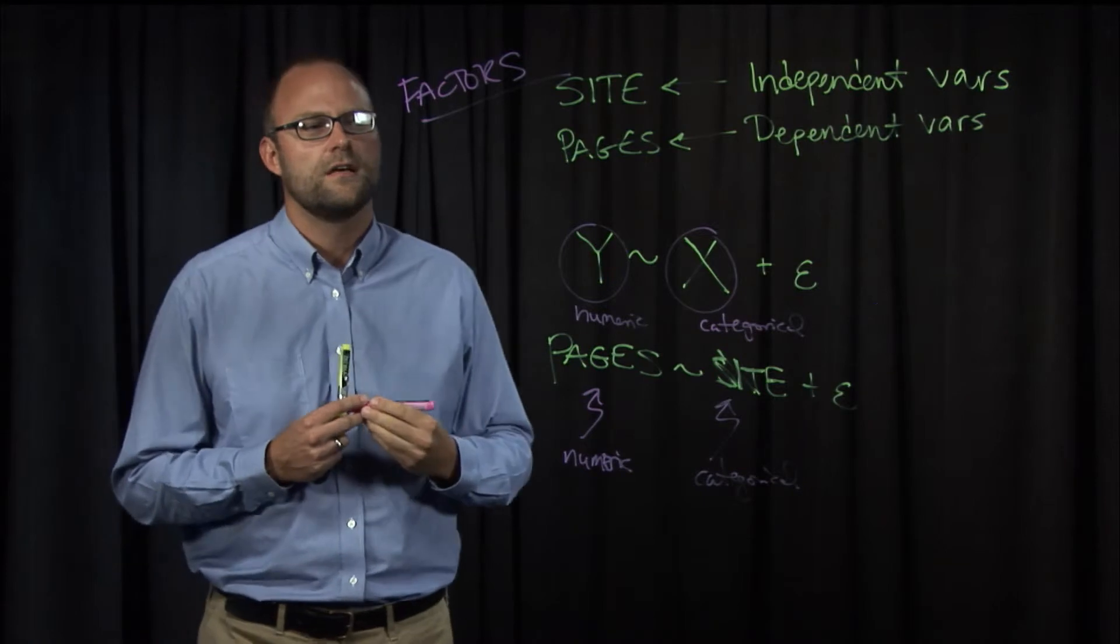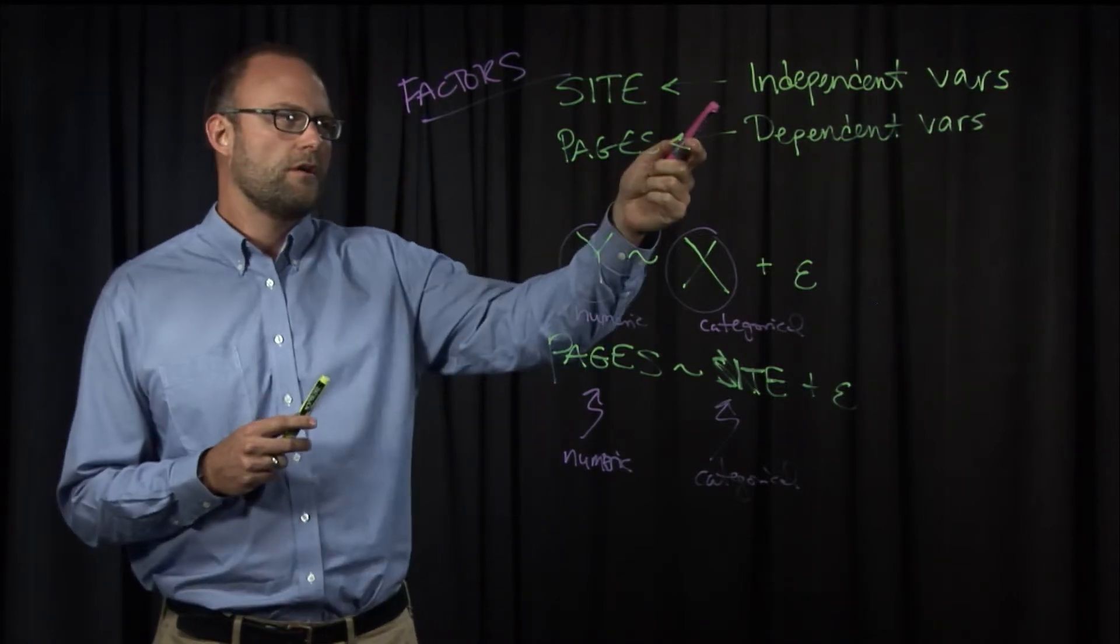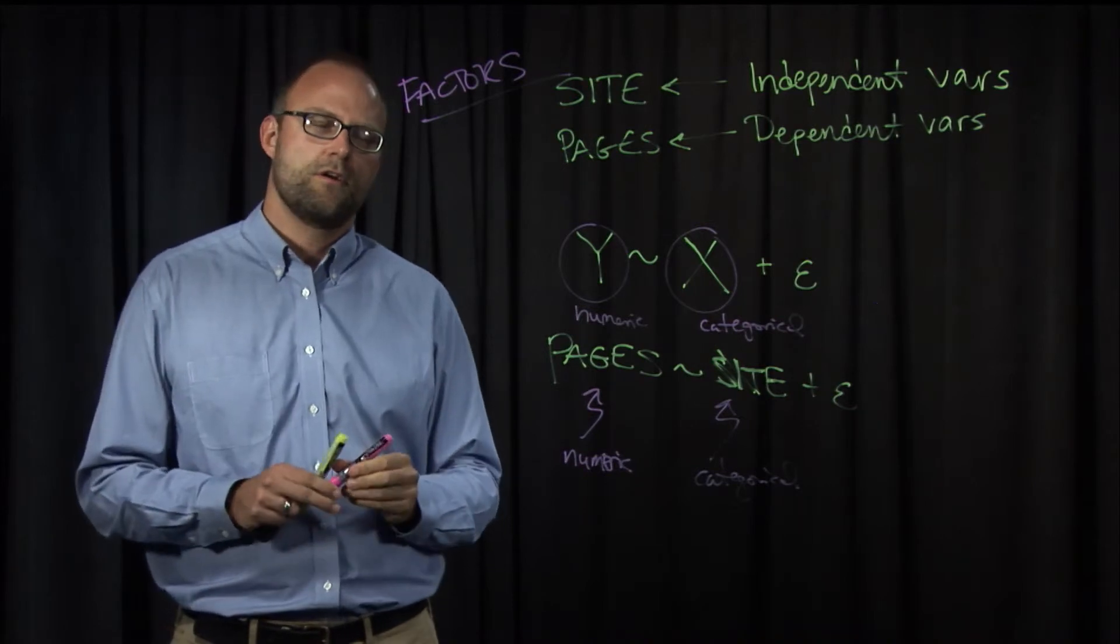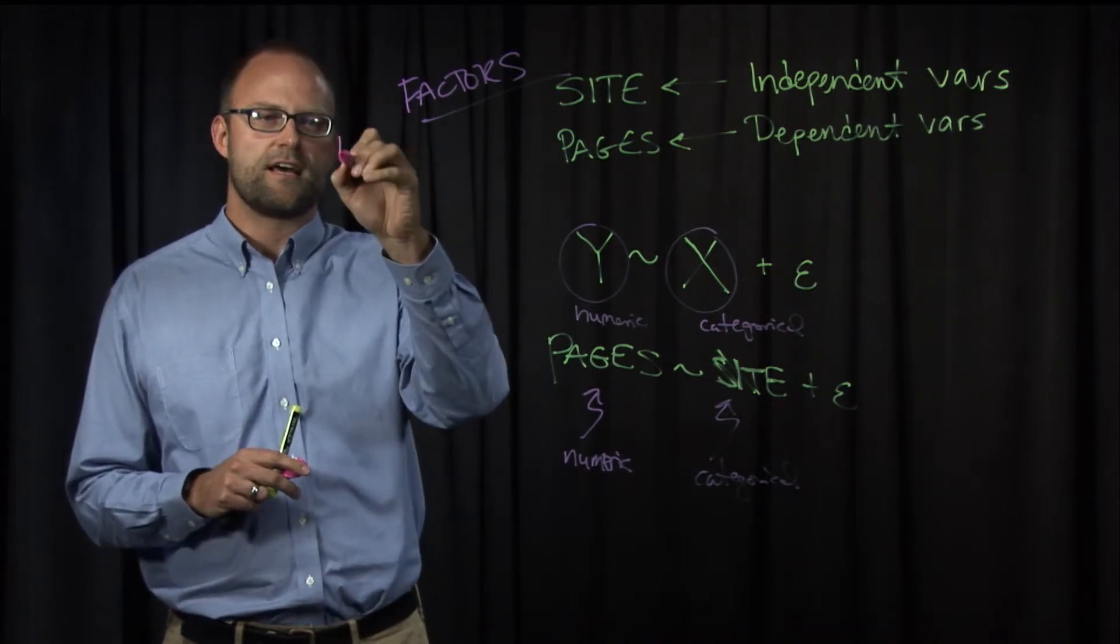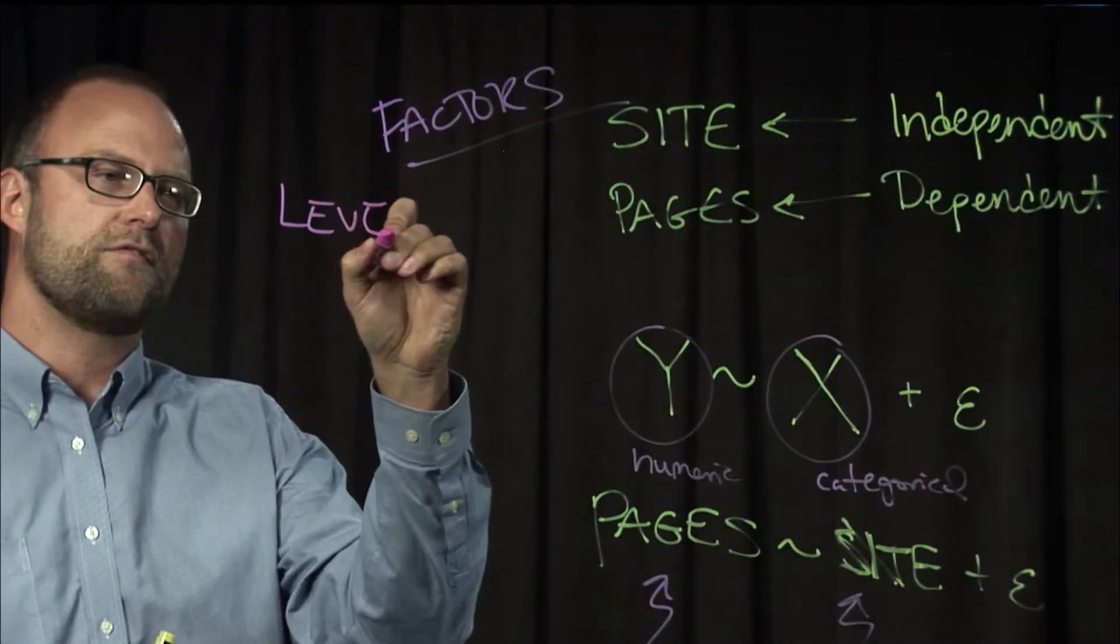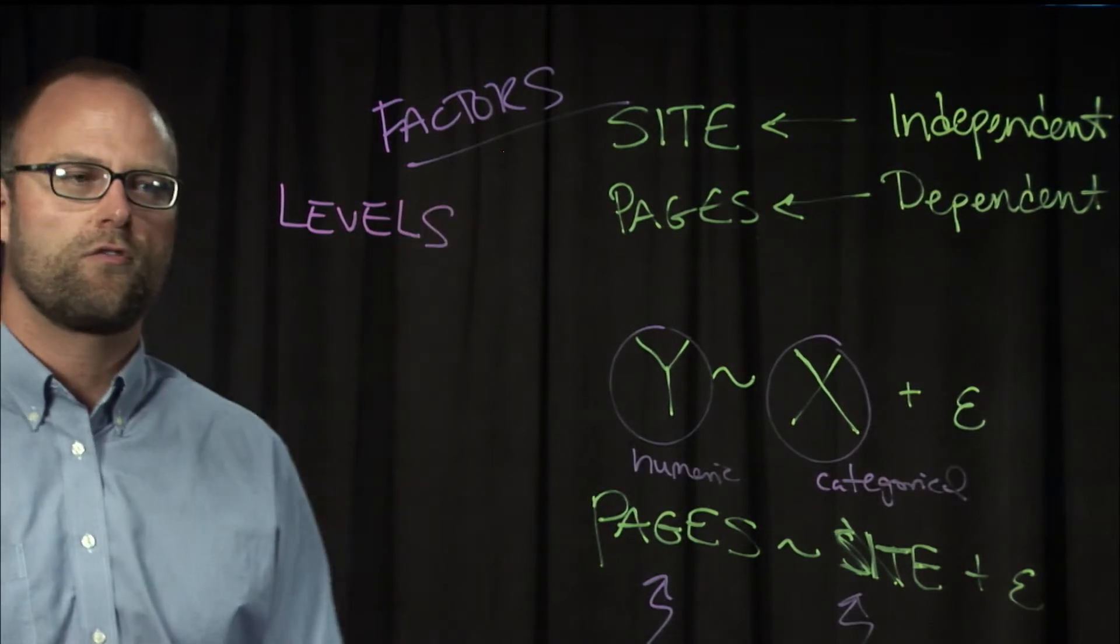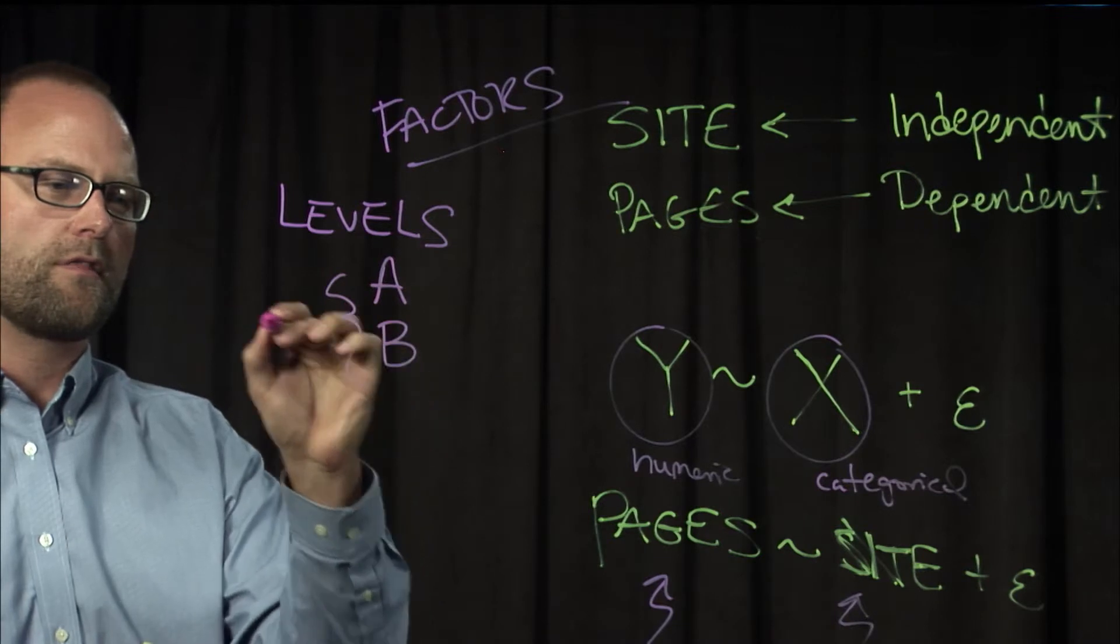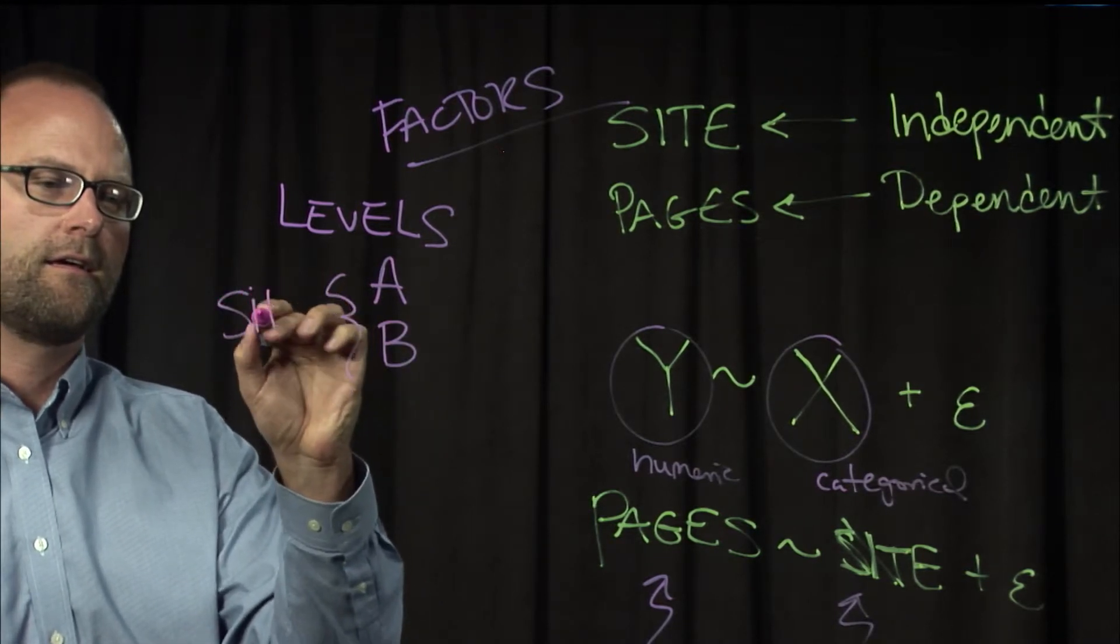And factors can take on values. Just like site has, in this case, two values. Those values are called levels of the factor. So we have levels A and B for the site factor.